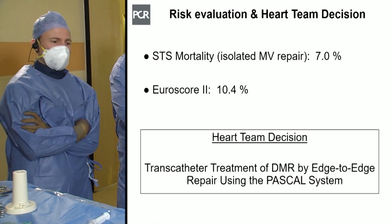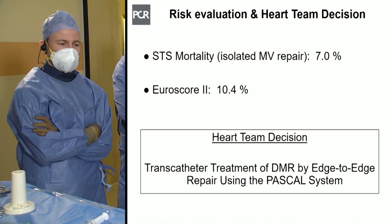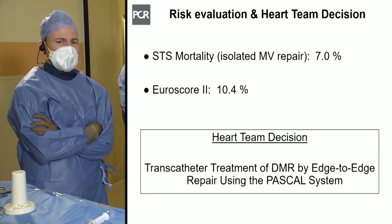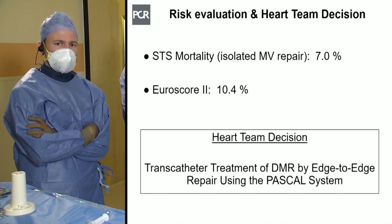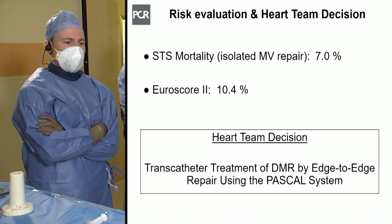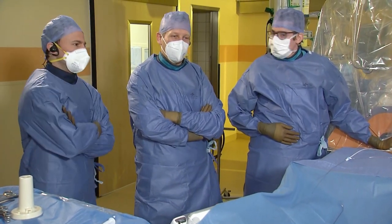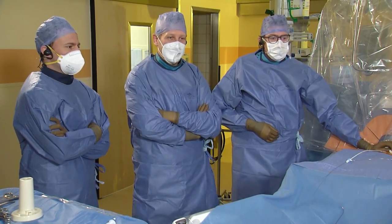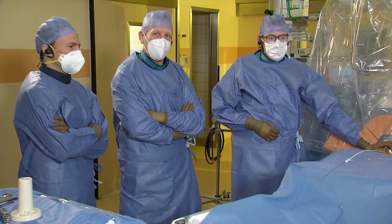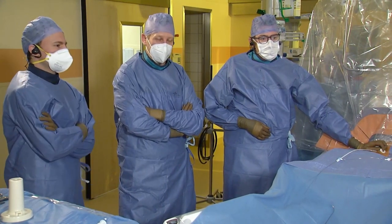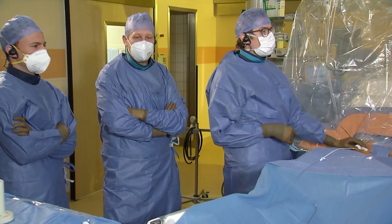Risk evaluation for operative mortality revealed an STS score for isolated mitral valve repair of 7% and a EuroSCORE II of 10%. The case was discussed in the local heart team, and the decision was made to treat this patient by a transcatheter approach — edge-to-edge repair using the Pascal system. From a surgical perspective, this is a typical patient with primary mitral regurgitation; given the age and prior coronary bypass surgery, he is a very good candidate for treatment with an edge-to-edge device.